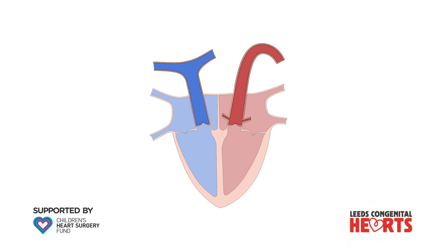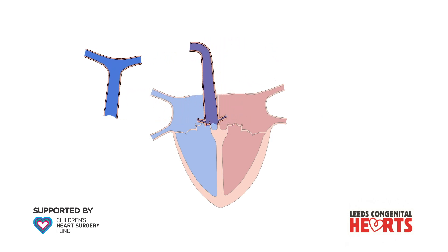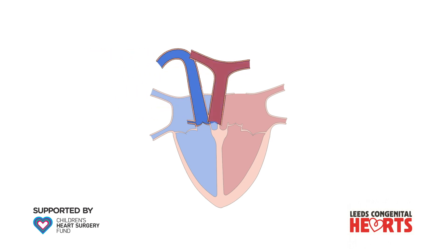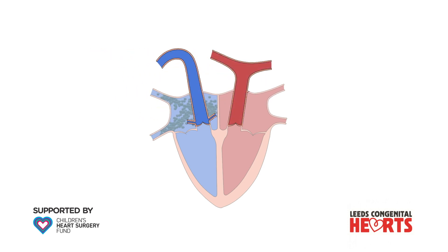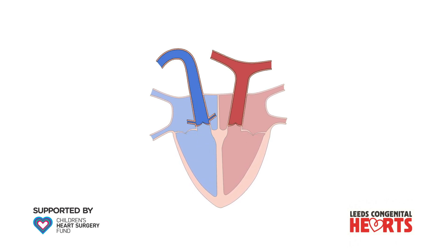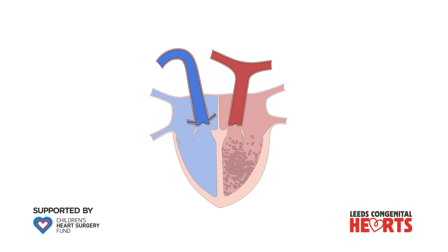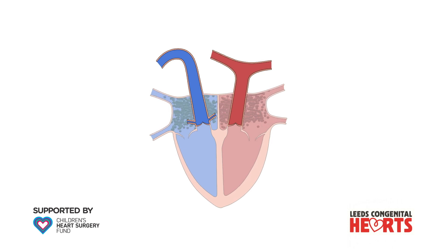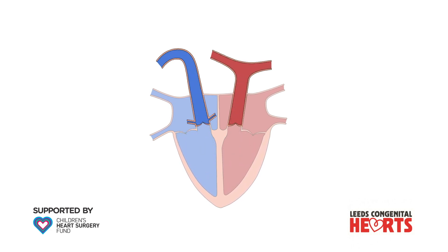In transposition of the great arteries, the aorta and pulmonary artery are connected to the heart the wrong way round. This means that blood returning from the body that is low in oxygen is pumped out of the right ventricle to the aorta and so back around the body. At the same time, blood returning from the lungs that has lots of oxygen is pumped from the left ventricle to the pulmonary artery and back to the lungs. The consequence of transposition of the great arteries is that oxygen cannot be delivered to the body and unless treated quickly, the baby is unlikely to survive.